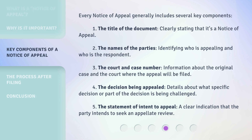Every Notice of Appeal generally includes several key components: 1. The title of the document, clearly stating that it's a Notice of Appeal. 2. The names of the parties, identifying who is appealing and who is the respondent. 3. The court and case number — information about the original case and the court where the appeal will be filed. 4. The decision being appealed — details about what specific decision or part of the decision is being challenged. 5. The statement of intent to appeal — a clear indication that the party intends to seek an appellate review.